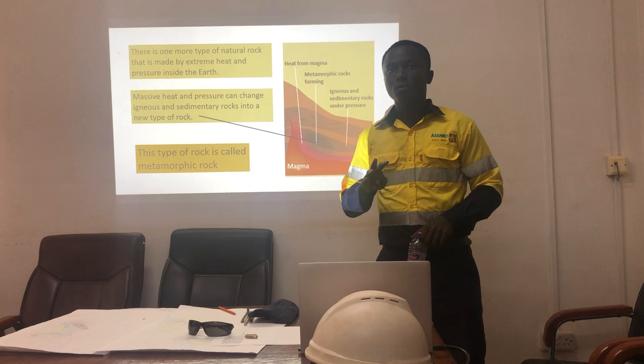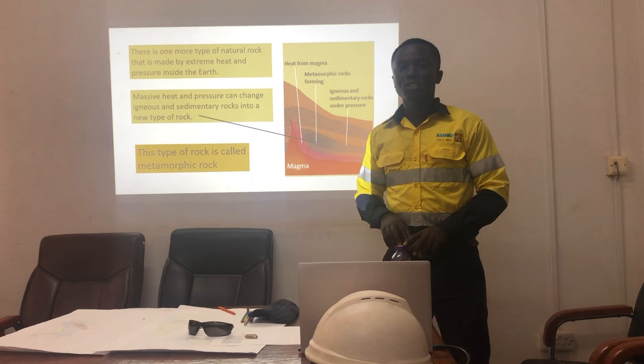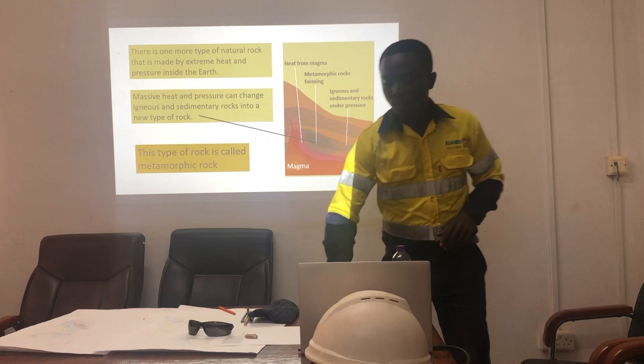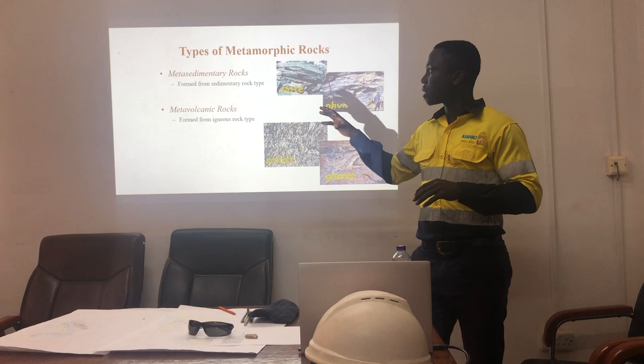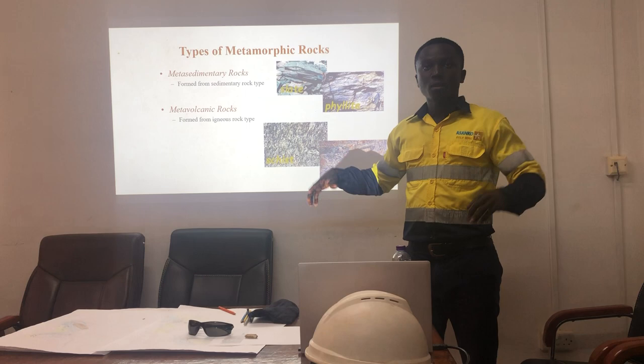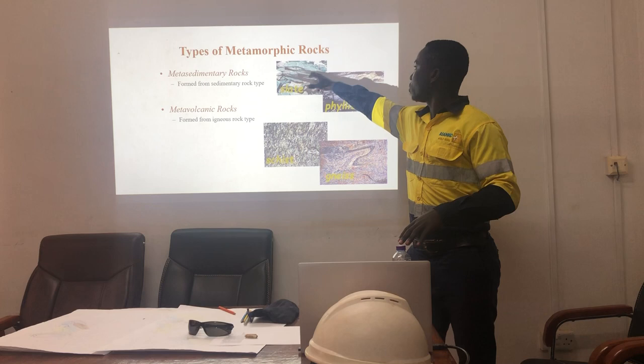We also have metamorphic rock. Metamorphic comes from two key words: meta and morphic. Meta means change and morphic means form, so metamorphic means change of form. Depending on the type of parent material, you may have two types: meta-sedimentary rock and meta-volcanic rock. Metamorphic rock is formed as a result of heat and pressure changes.